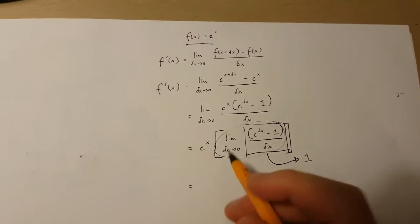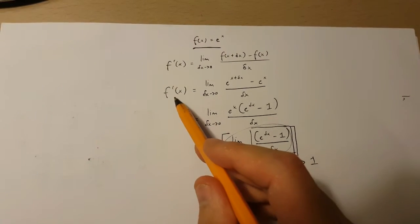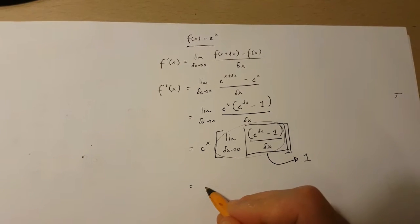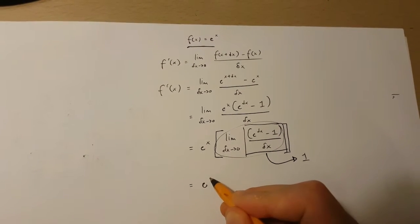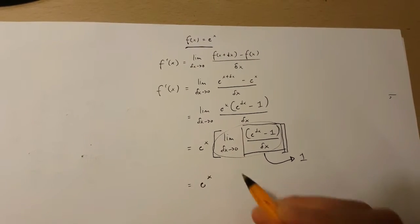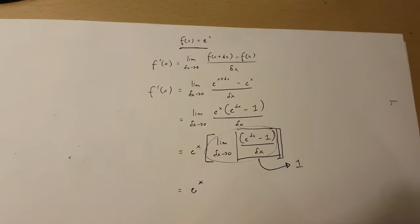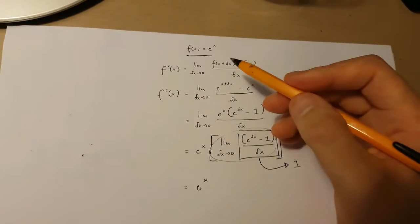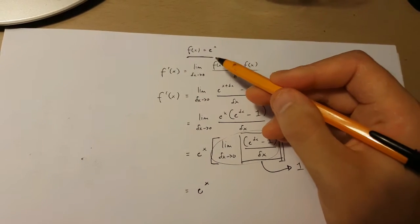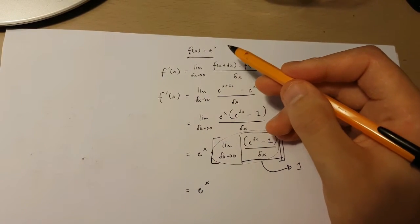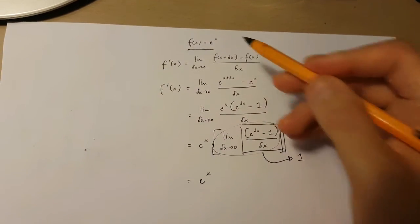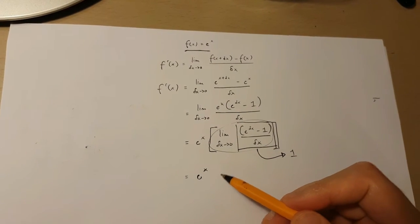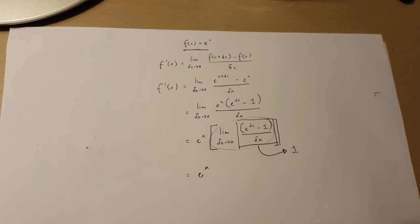So what we get is the derivative of the function of x is equal to e to the power of x. And we've proven that if the function of x is e to the power of x, then its derivative is e to the power of x.